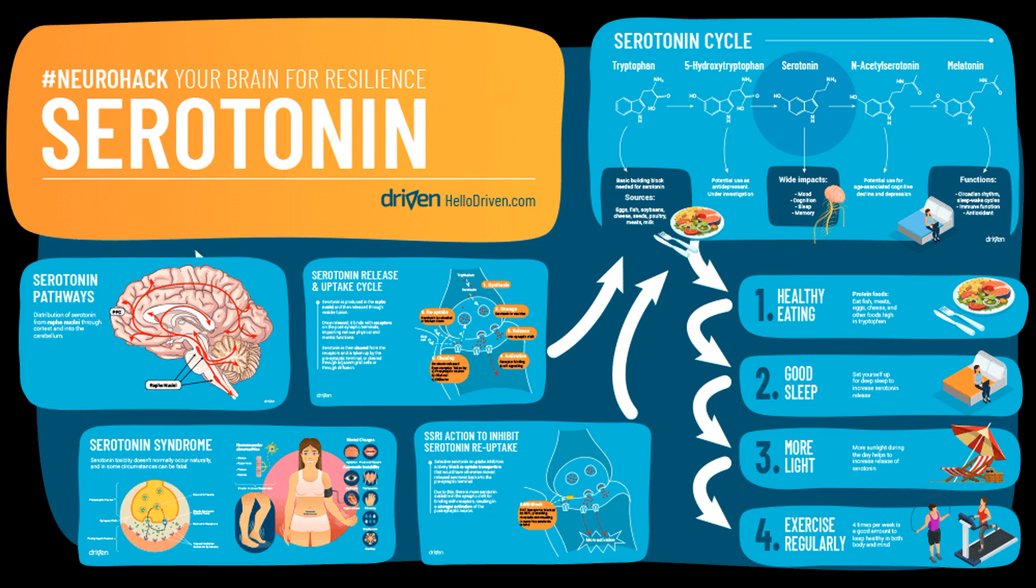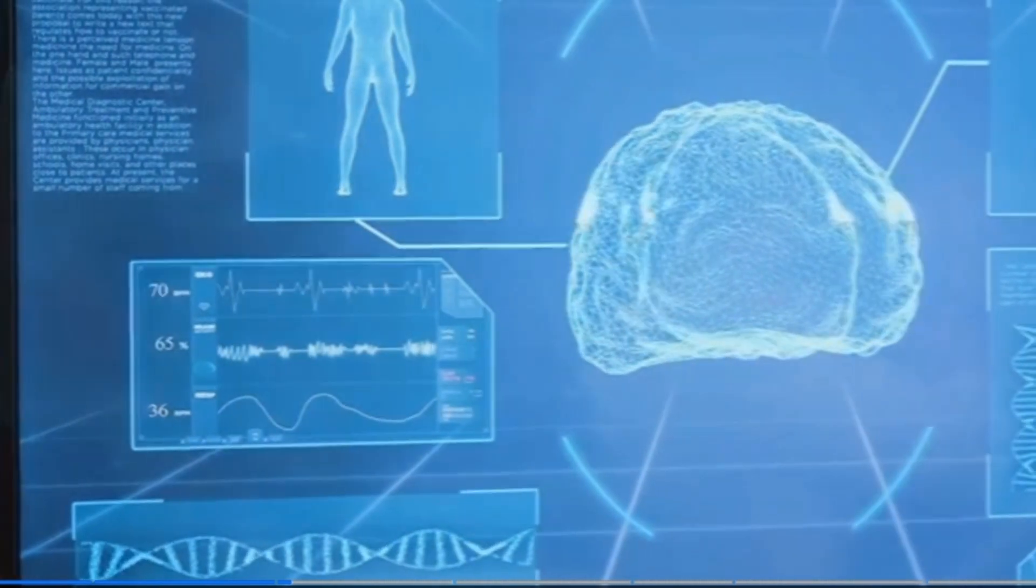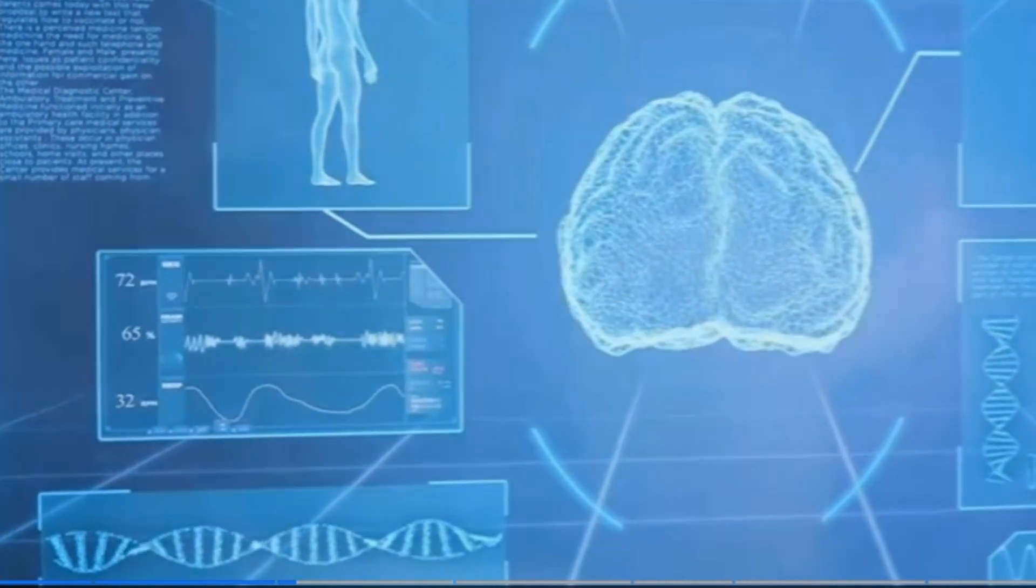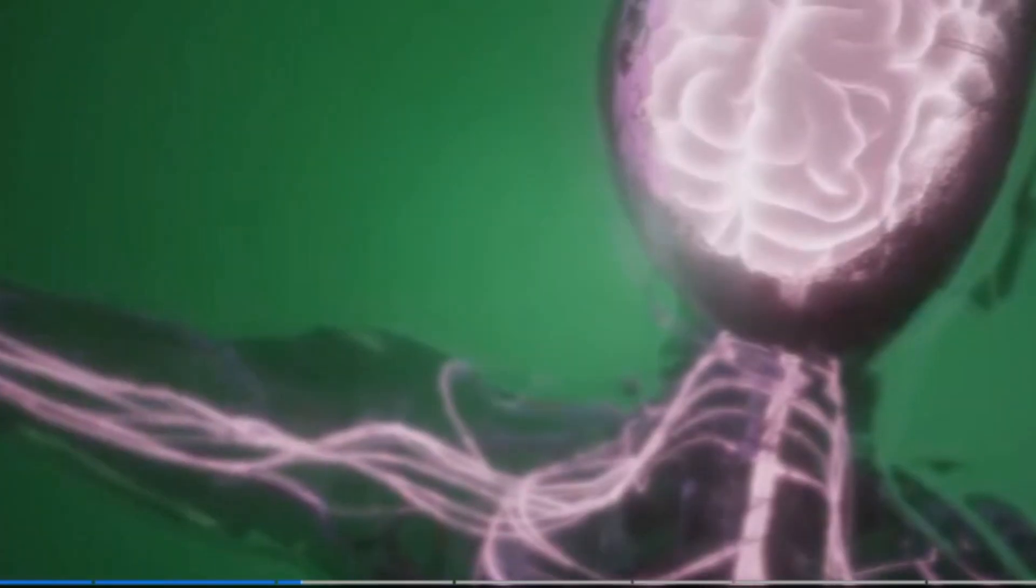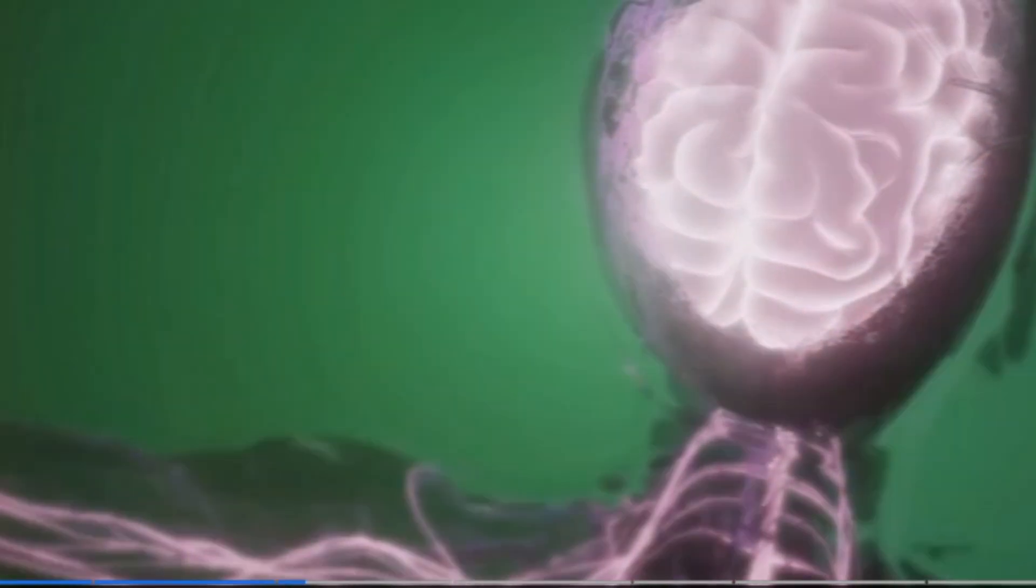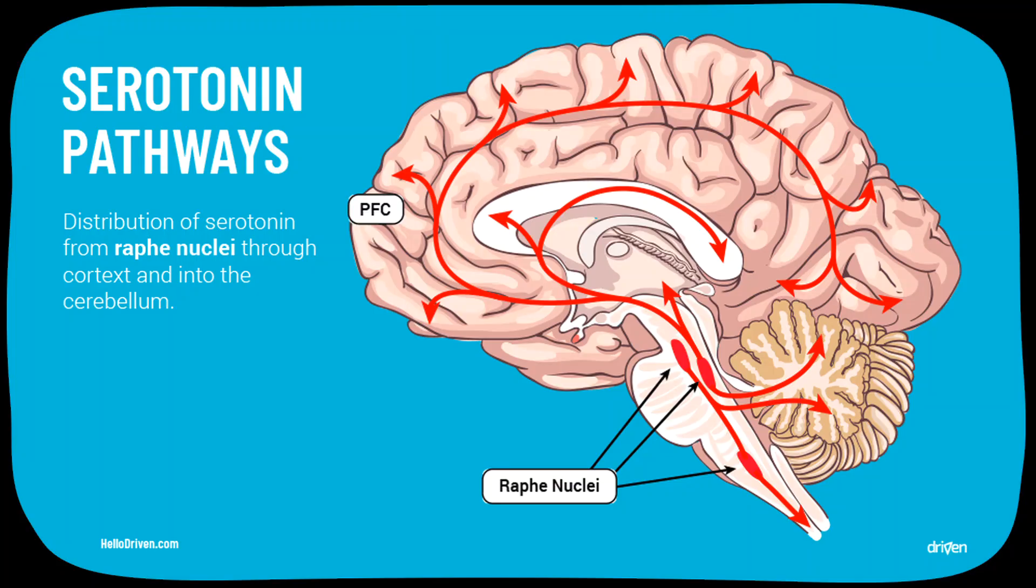Serotonin is another key neurotransmitter. It is often called the happiness hormone because it influences mood, emotion, and sleep. Serotonin pathways are widespread, originating from the raphe nuclei in the brain stem and projecting to various brain regions.